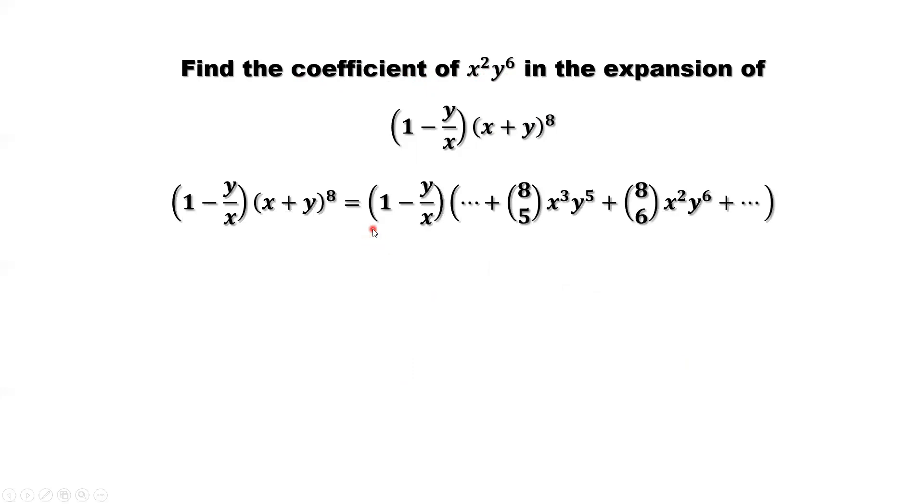So here, that's the detail. We only care about the two terms here. Others are not related to the term x²y⁶. Now, first one, that's 1 times this. We have one term containing x², y⁶.